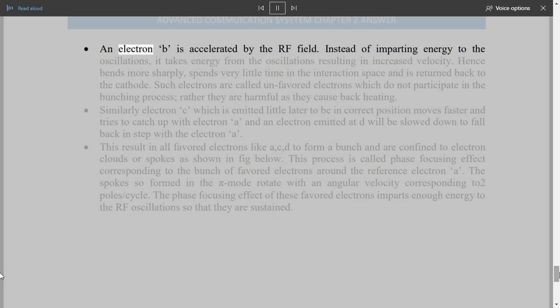The solid lines refer to the electron trajectories in the presence of RF oscillations in the interaction space. The electron A is seen to be slowed down in the presence of oscillations thus transferring energy to the oscillations during its longer journey from cathode to anode. Such electrons which participate in transferring energy to the RF field are called as favored electrons and these electrons are responsible for bunching effect. An electron B is accelerated by the RF field. Instead of imparting energy to the oscillations, it takes energy from the oscillations resulting in increased velocity. Hence bends more sharply, spends very little time in the interaction space, and is returned back to the cathode. Such electrons are called unfavored electrons, which do not participate in the bunching process. Rather they are harmful as they cause backheating. Similarly electron C, which is emitted little later to be in correct position moves faster, and tries to catch up with electron A. And an electron emitted at D will be slowed down to fall back in step with the electron A.